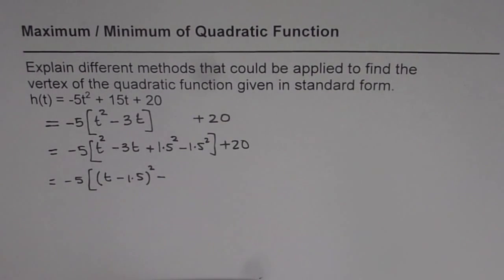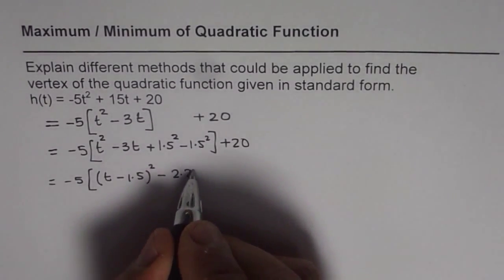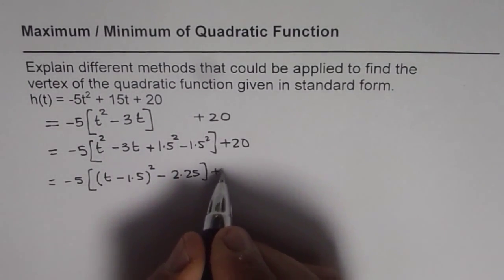So we can use calculator and find what 1.5² equals to. That is 9/4, which is 2.25 plus 20.